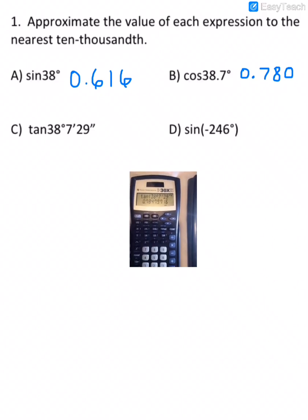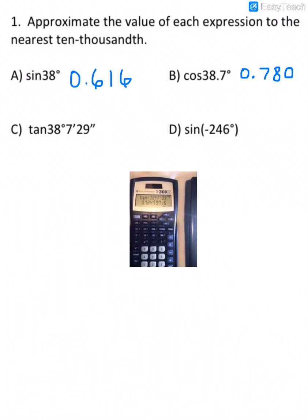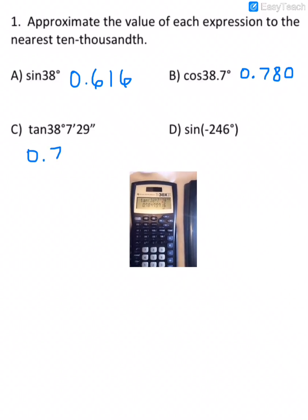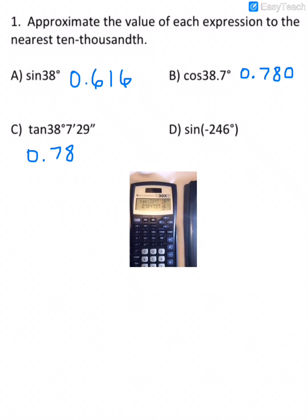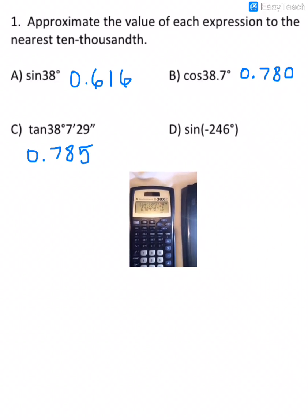And I get 0.78, and then it's 4.7, so that 4 would round up to a 5. Let me write that 5 a little bit better.